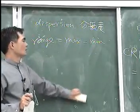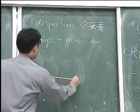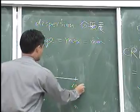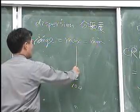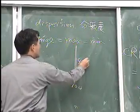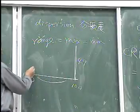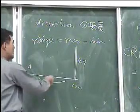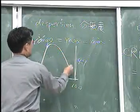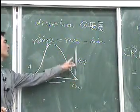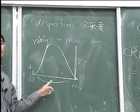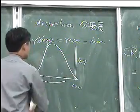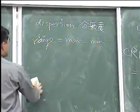For example, consider a distribution where 49 out of 50 people score 100 and one person scores zero, versus a very different spread. In both cases the range is 100, but the distributions are completely different. Range alone cannot distinguish between these two very different situations.